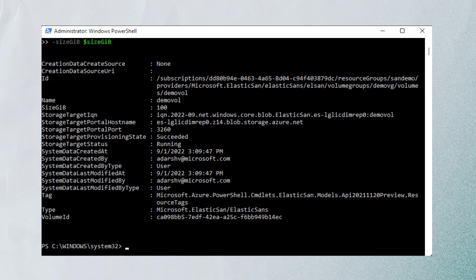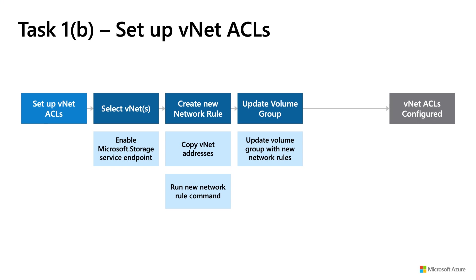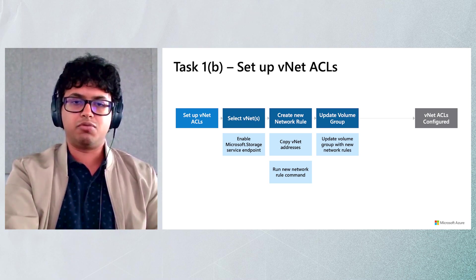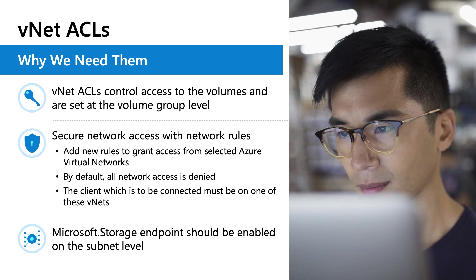Now I'll move on to how to set up VNets — setting up VNet ACLs. The flow is: you select the VNet, enable the Microsoft Storage endpoint, create a new network rule, and then update the volume group with this new network rule. Access to volumes is restricted by virtual network access rules. By default, data access from any clients to volumes under a newly constructed volume group is blocked. VNet ACLs control data access to the volumes in a volume group. First, enable the Microsoft.Storage service endpoint in the VNet you plan to grant access to. Next, add the VNet rules to the volume group. Finally, make sure the VM you wish to connect is on one of the VNets you have added as a VNet rule.